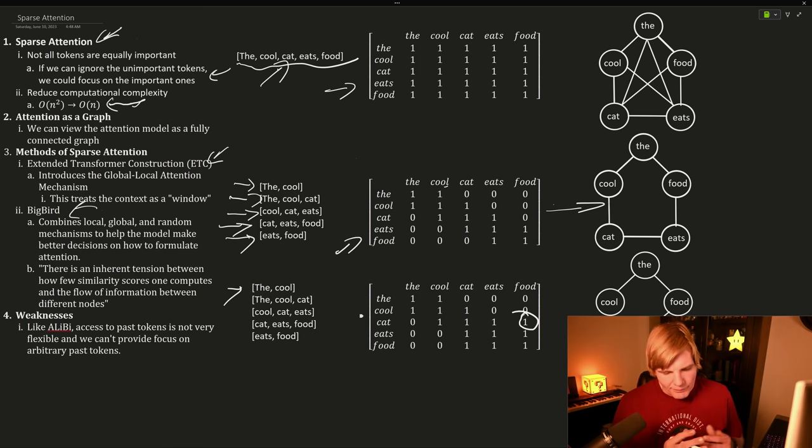But these are powerful, but they do have weaknesses. Specifically, just like Alibi, the access to the past tokens is not super flexible, and we can't provide focus on arbitrary past tokens.